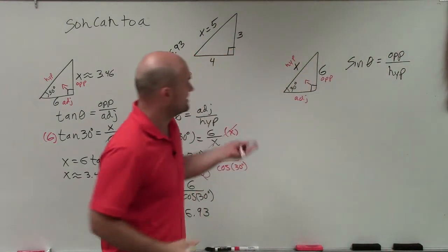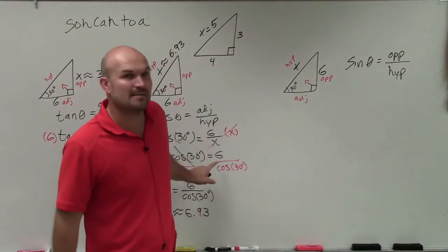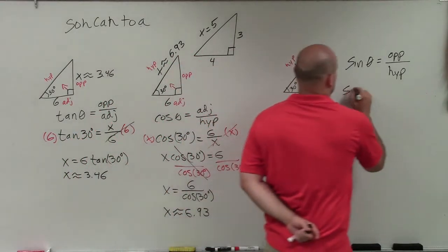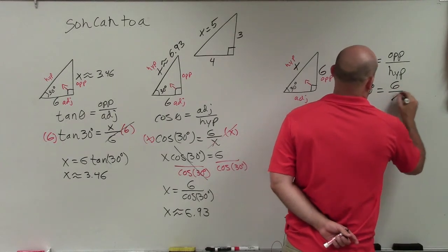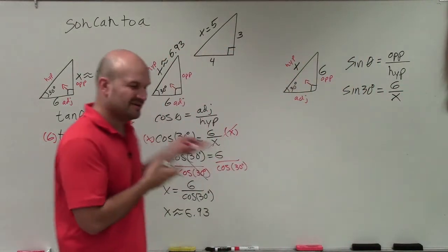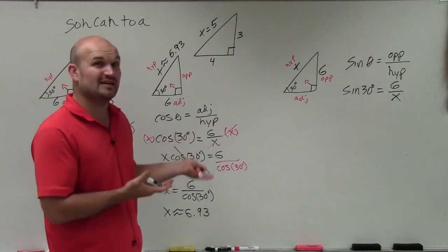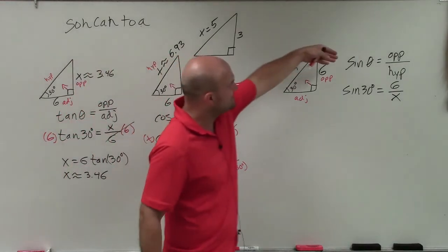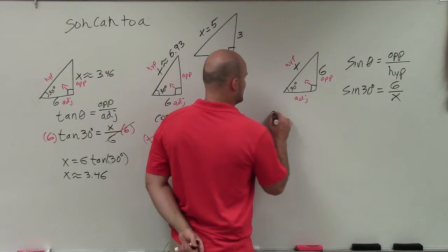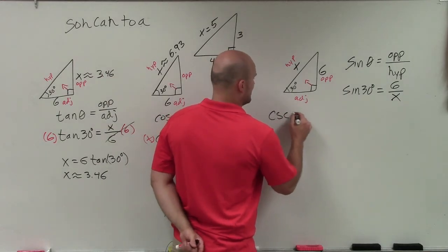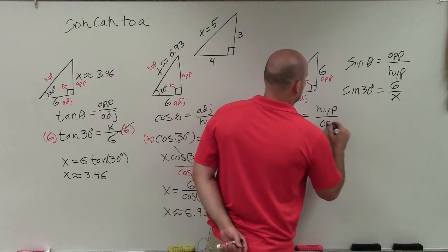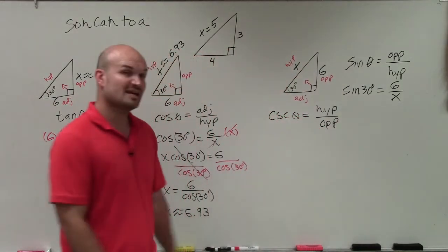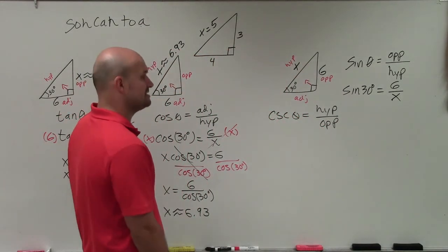If I was going to plug in everything else again, I would have an x in the denominator. So I'd say sine of 30 degrees is equal to 6 over x. If you're having trouble, you didn't really understand what I did there, you can also think about the reciprocal. If sine is opposite over hypotenuse, the reciprocal identity is cosecant of theta, which is hypotenuse over opposite. Some people like using the reciprocal identities a little bit better. They're just reciprocals of each other.